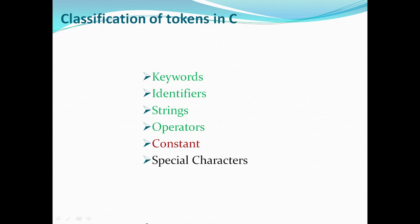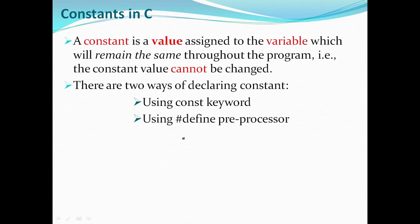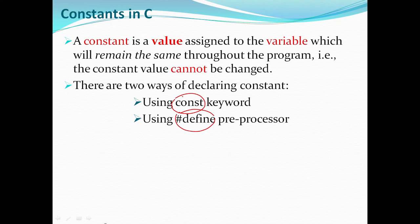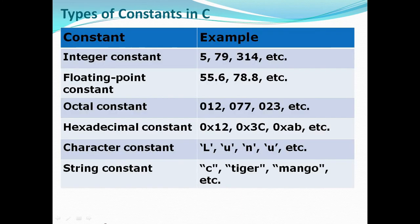Next is the constant. A constant means the value will remain the same throughout the program — it will not change. In contrast, a variable's value can change. There are various types of constants.